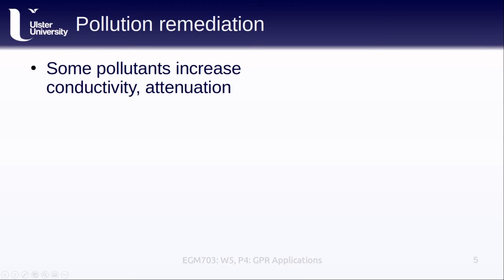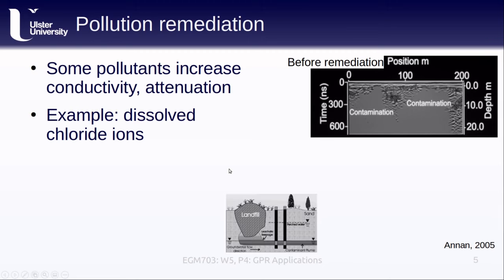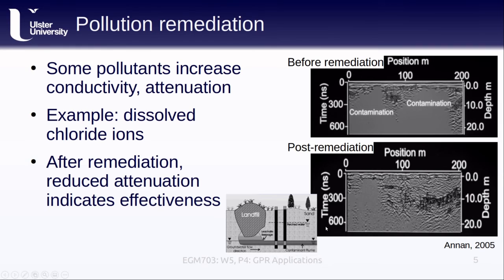While some pollutants increase reflection, others will increase conductivity or attenuation in a GPR image. This image shows a GPR survey for a contaminated area before a remediation project. The main source of contamination here is dissolved chloride ions, which greatly increase the attenuation of the radar signal at certain frequencies. This site is downstream of a landfill that is leaching contaminants into the water table. Five years after initial steps were taken to remediate the pollution using pumping well remediation strategies, the GPR signal has changed dramatically, and the overall improvement is readily apparent.